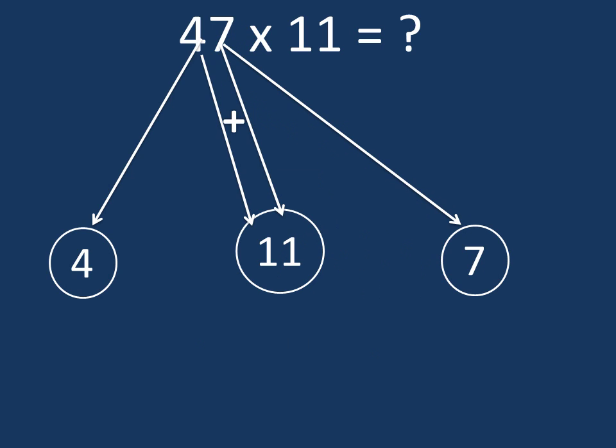Didn't you find it easy? Let us take another example: 47 × 11. So the last digit is 7. Write 7 in the extreme right. Then 7 plus 4 is 11.